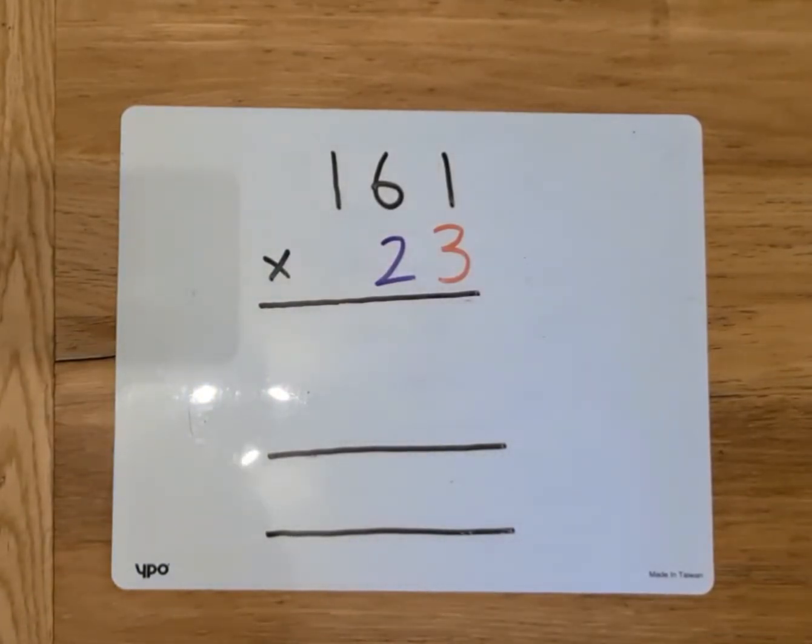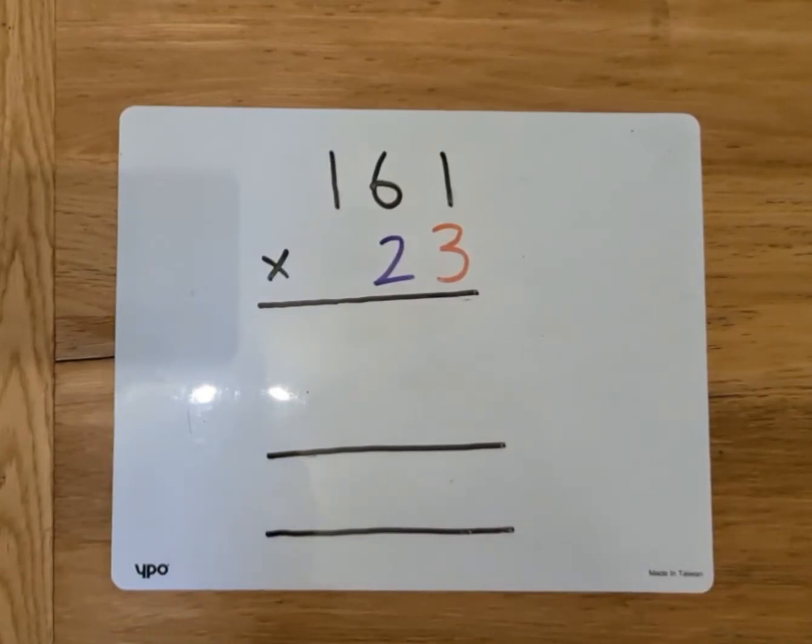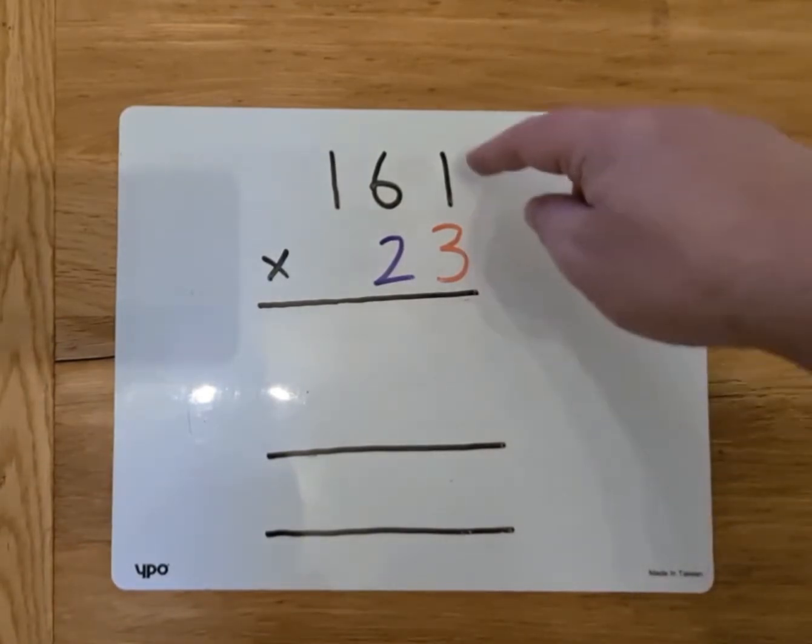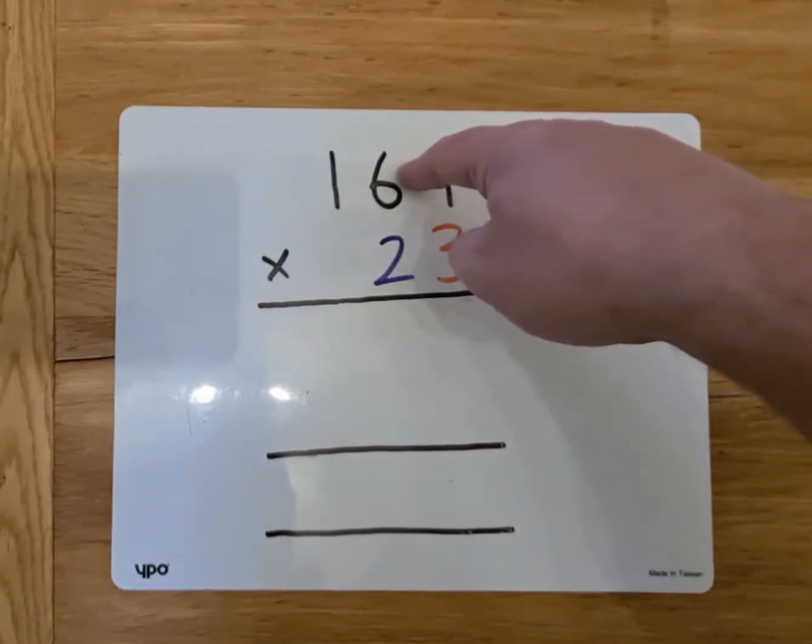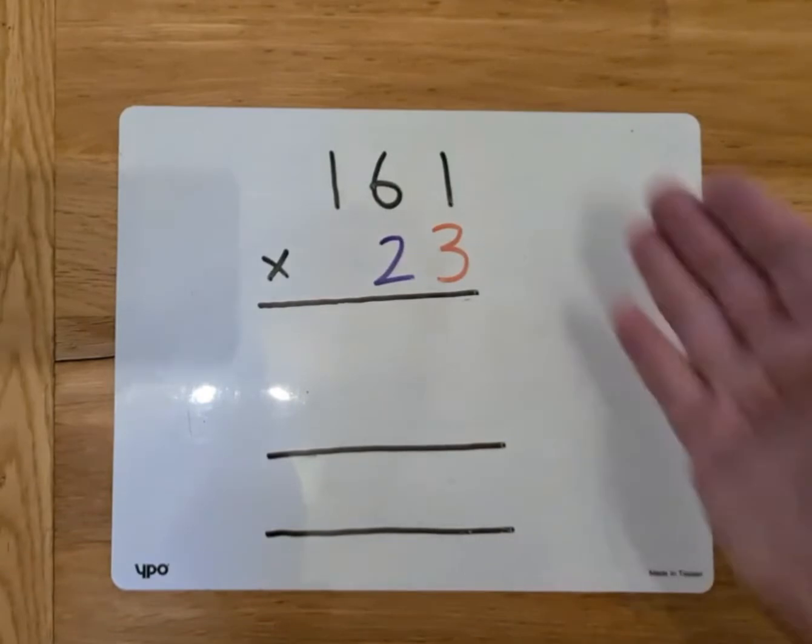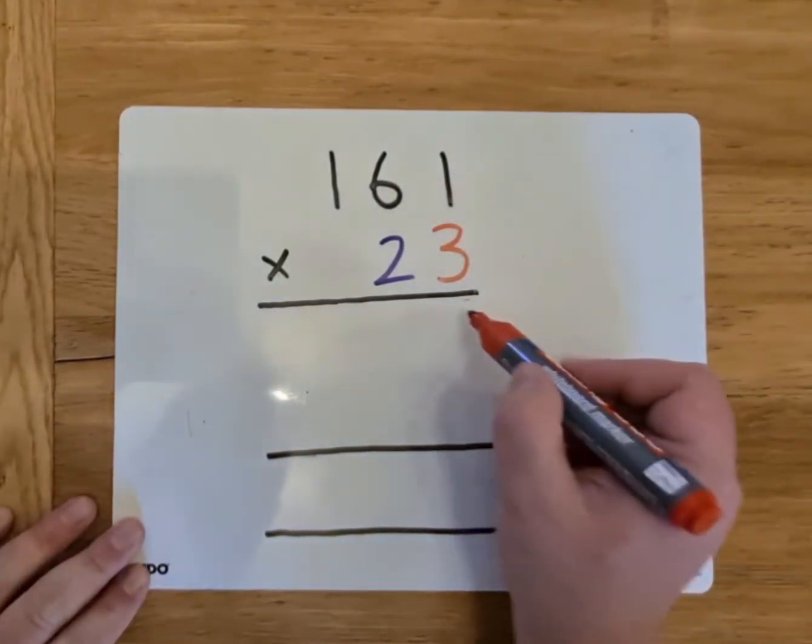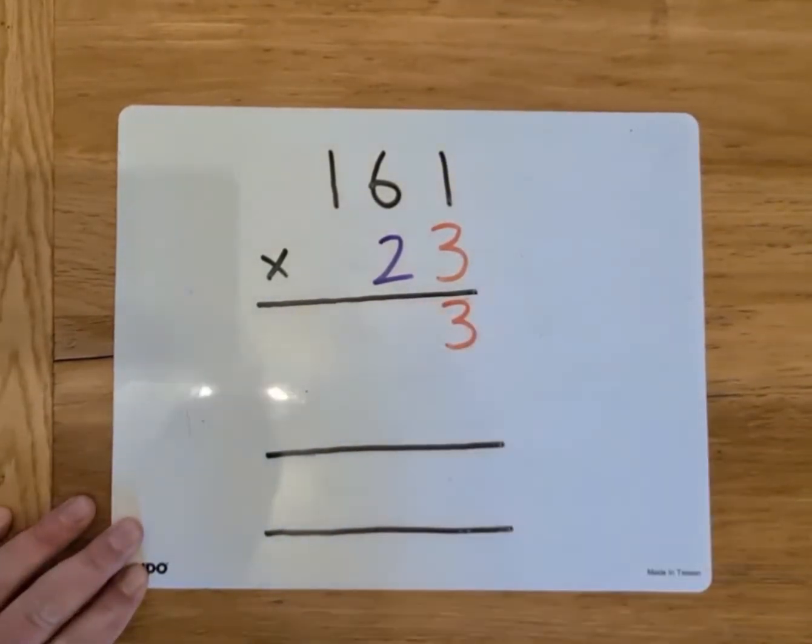So looking at the first question on your sheet, it's 161 times 23. We think about the 20 and the 3, we'll start with the units, so we're going to multiply the 3 by the 1 initially, then we'll multiply it by the tens, and then by the hundreds. We'll keep going until we've run out of numbers. There's nothing in the thousands column, so we'll stop at the hundreds. Looking at the first one, 3 times 1 is 3.